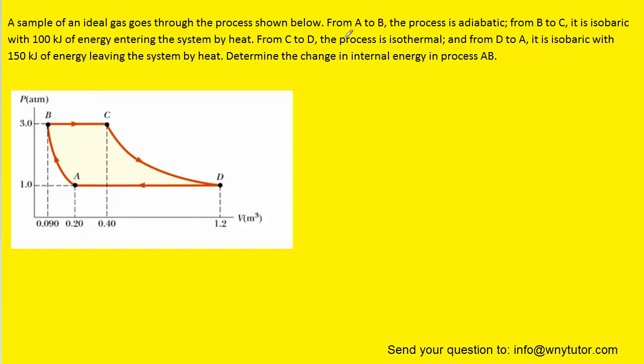The question notes that from A to B the process is adiabatic. And in that case, the change in internal energy is going to equal the work done. And the work done is actually the area underneath the PV graph, and of course that's the graph we have here. We have a pressure versus volume graph.